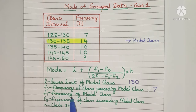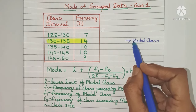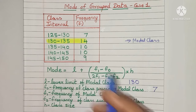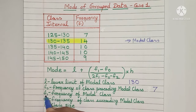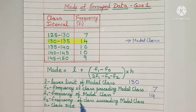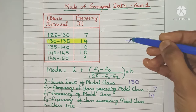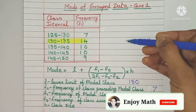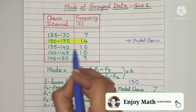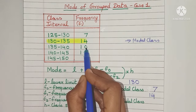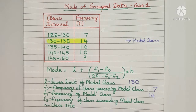F1 is the frequency of the modal class itself, which is 14, so F1 will be 14. Now F2 is the frequency of the class succeeding the modal class — succeeding means coming after. The class that comes after the modal class has a frequency of 10, so F2 will be 10.